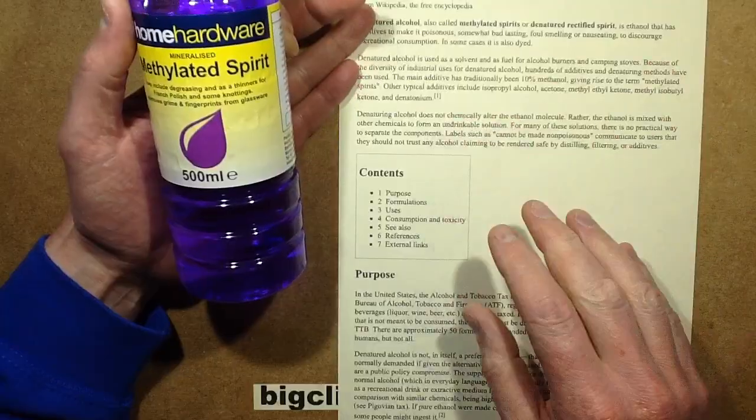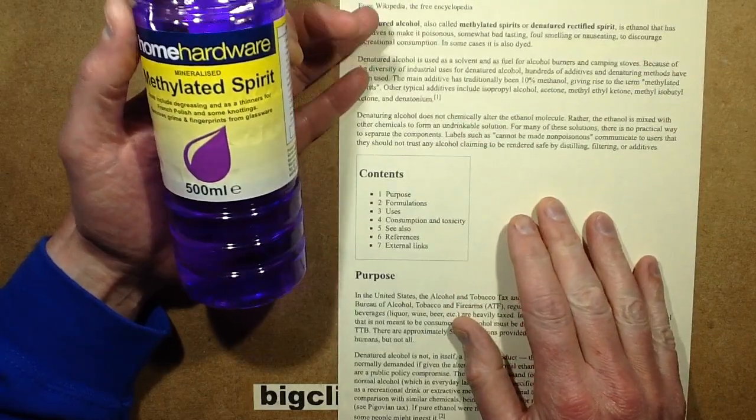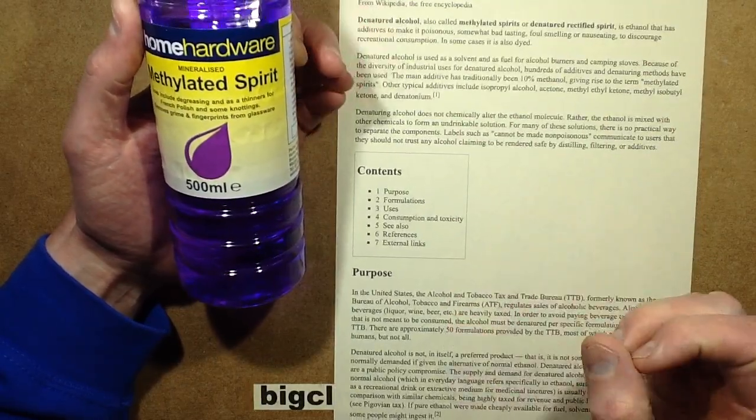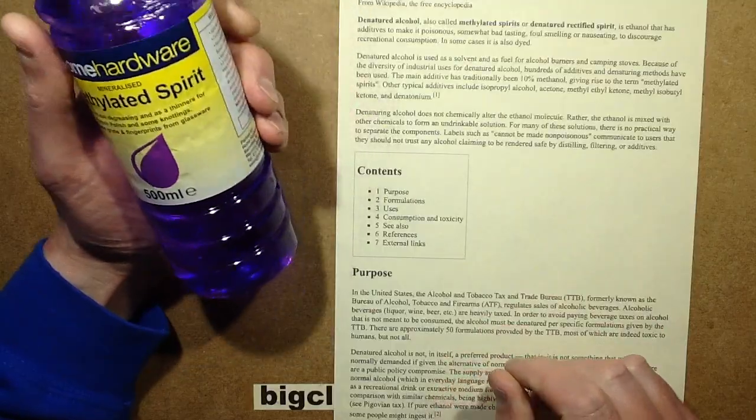Now, denatonium is a chemical which is often called Bittrex, and is really unbearably bitter in parts of 10 parts per million.